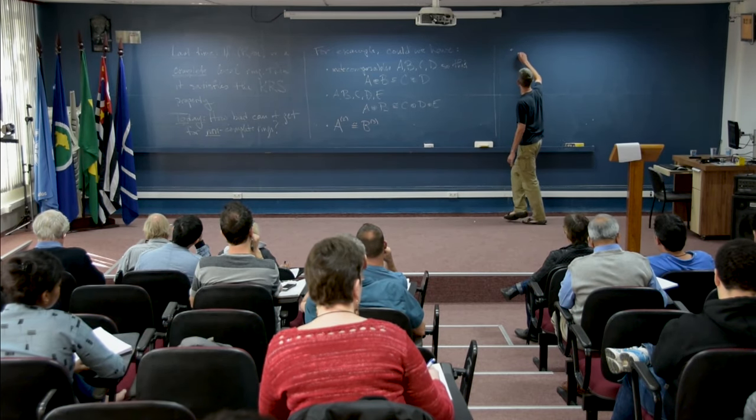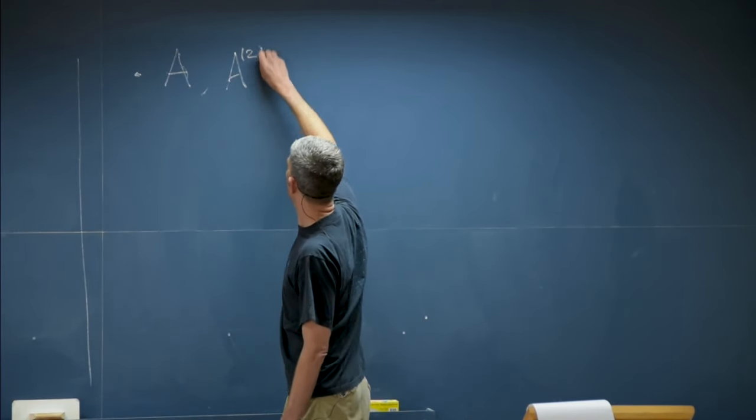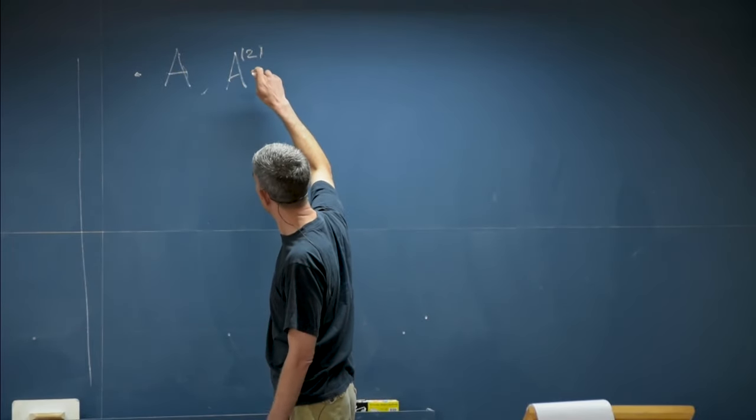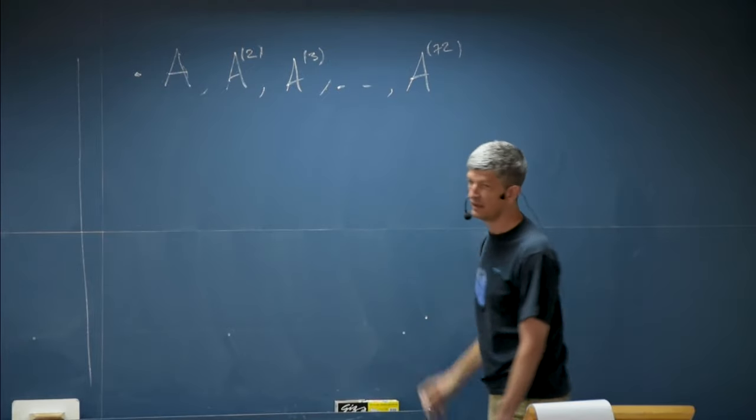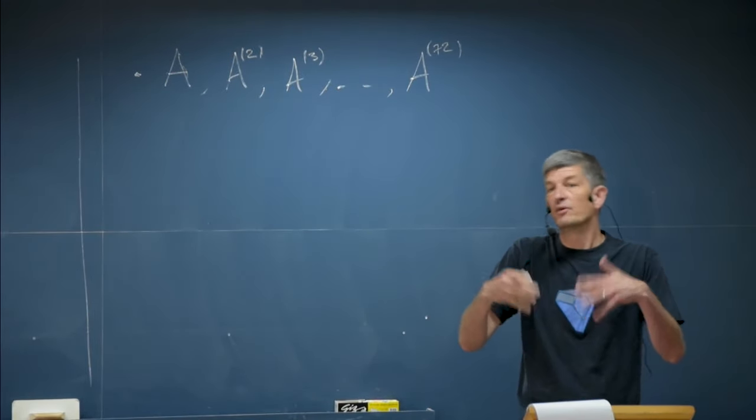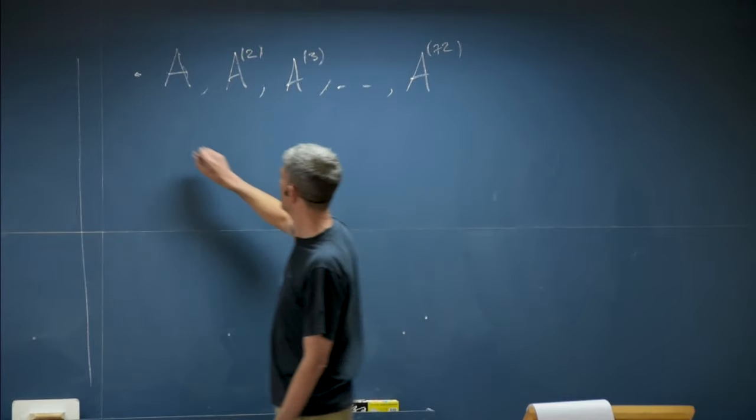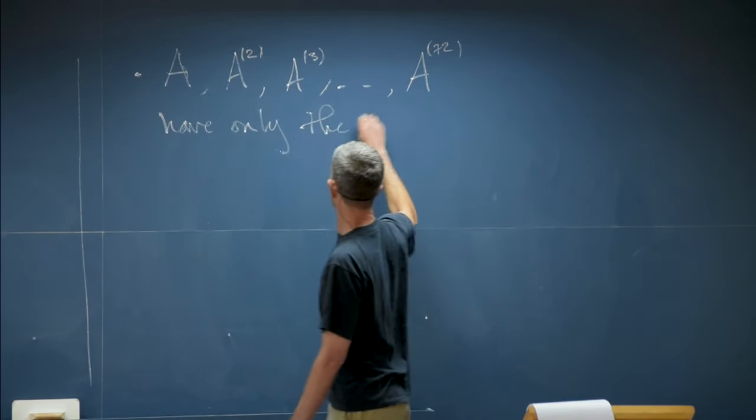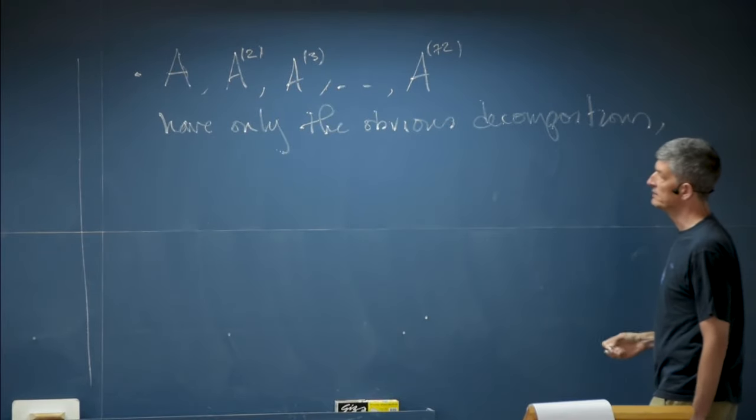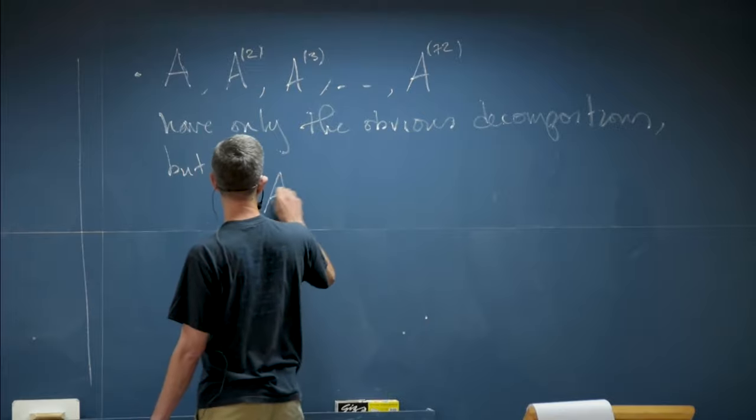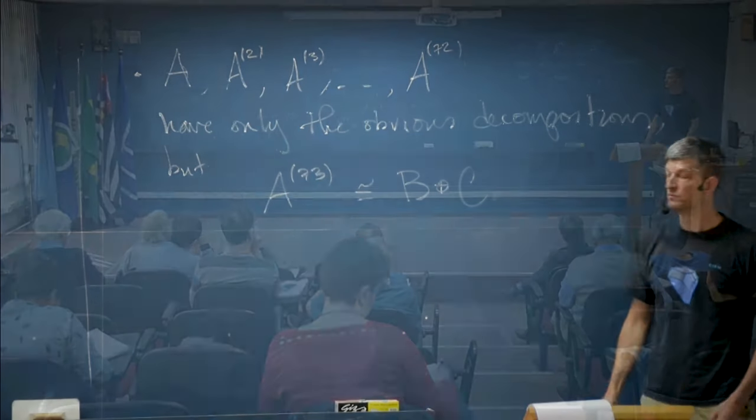Could we have A indecomposable so that A, direct sum of two copies of A, direct sum of three copies of A and so on up to a direct sum of 72 copies of A, so that these all have only the expected decompositions, but when you get to 73 that decomposes into indecomposables.